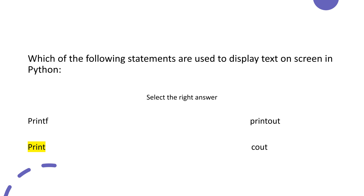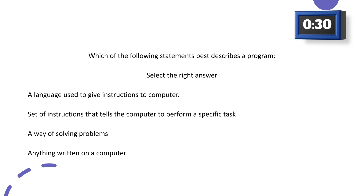The answer for our first question is print. Next question: which of the following statements best describes a program? Option A: a language used to give instructions to the computer. Option B: a set of instructions that tells the computer to perform a specific task. Option C: a way of solving problems on a computer.